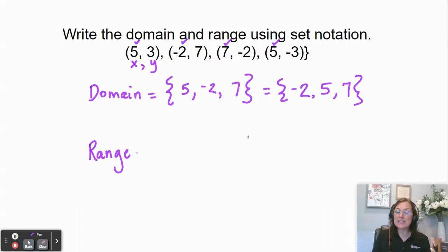So we'll go through. This is 3, and 7, and -2, and -3. And of course we want to write that final answer in numerical order.